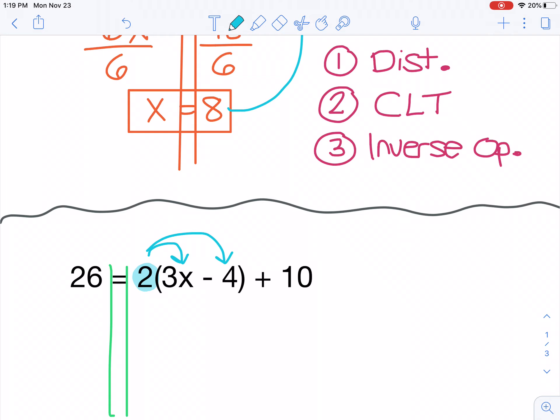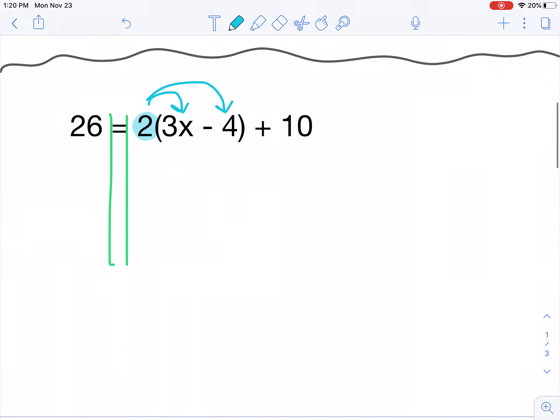All right, so hopefully if you're back to the video at this point, you have a value of x that you've already found. I'm going to finish my work so that I can check with yours. So using my distributive property first, I do 2 times 3x. That gives me 6x. 2 times that minus 4 will give me minus 8. And then I still have this plus 10 over here that I haven't dealt with yet. I'm going to move down my 26 on the other side. So now I have a new equation that says 26 equals 6x minus 8 plus 10.